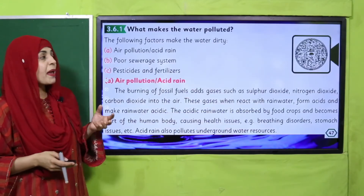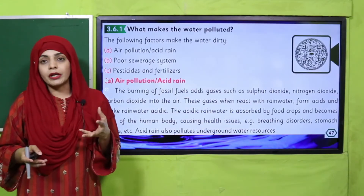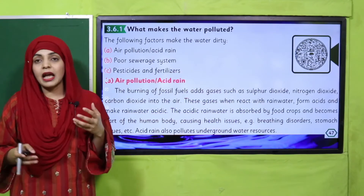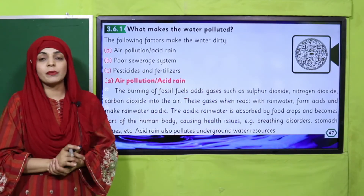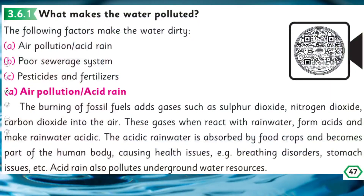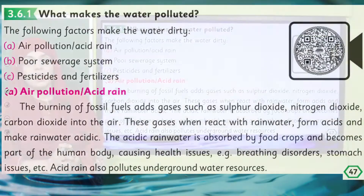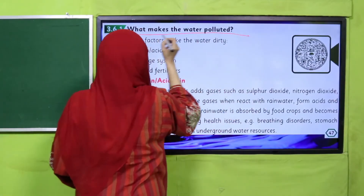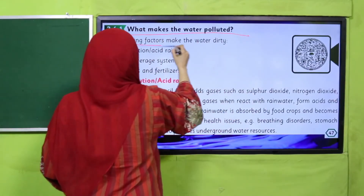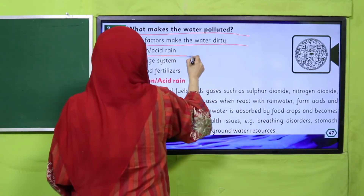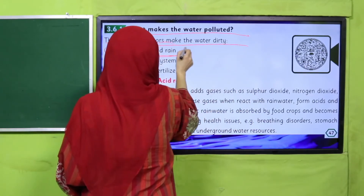So, what makes the water polluted? Paani ko kya cheez ganda karti hai? Quickly open page number 47 in your books. The following factors make water dirty: air pollution that is acid rain, poor sewerage system, and pesticides and fertilizers.